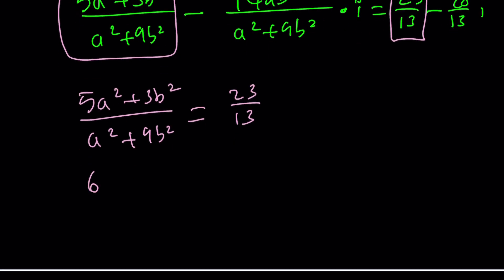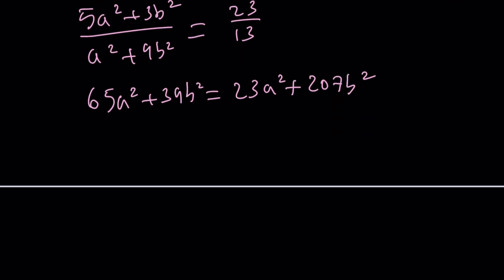We get 65a squared plus 39b squared equals 23a squared plus what is 23 times 9? I think it's 207 right? 180 plus 27. Yeah. 207b squared. Let's see. Put the a squared together. We're going to get 42a squared equals